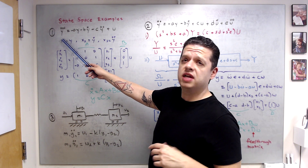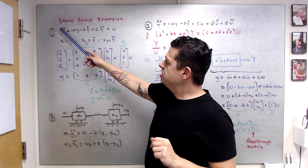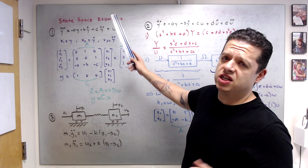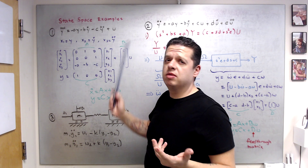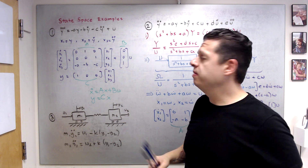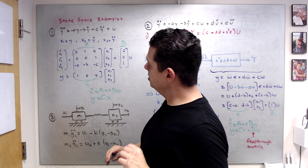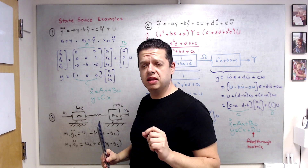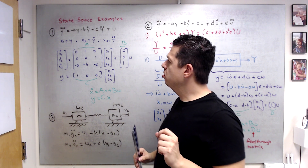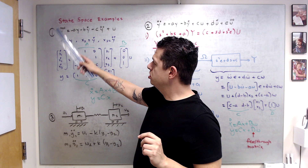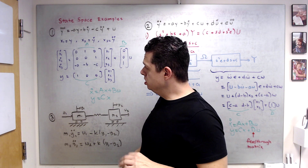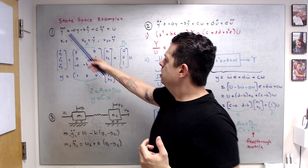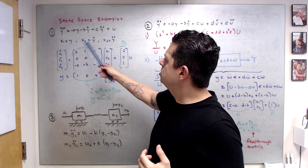For the first example, our ordinary differential equation representing some physical system looks like: y-triple-dot equals minus a·y minus b·y-dot minus c·y-double-dot plus u. The constants a, b, c can be negative or positive. Since this is a third-order ODE — we always look at the output's highest derivative to determine the order — we need three state variables.